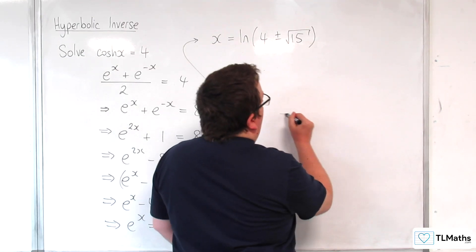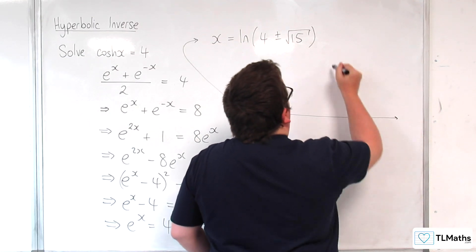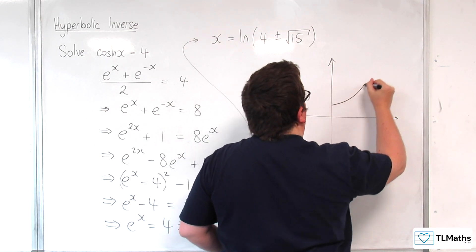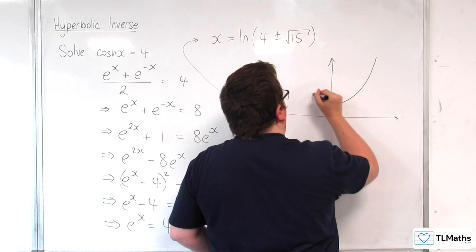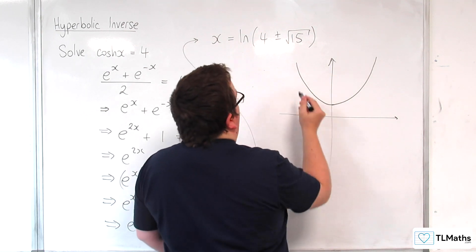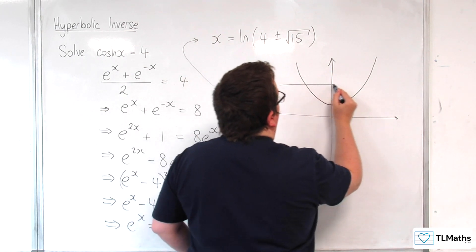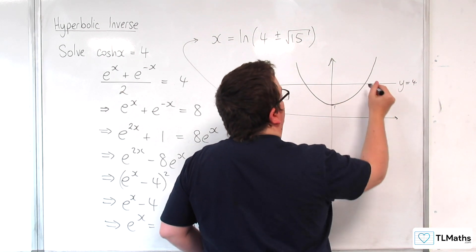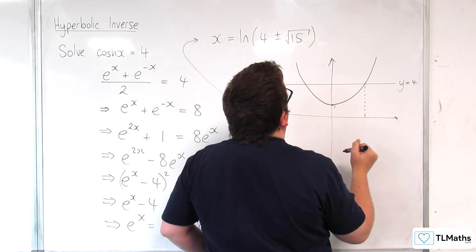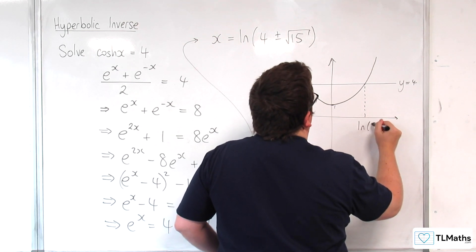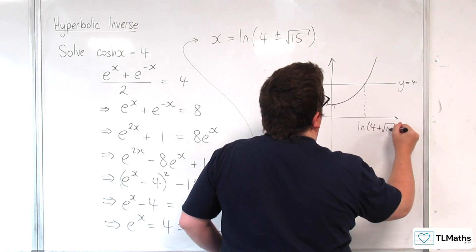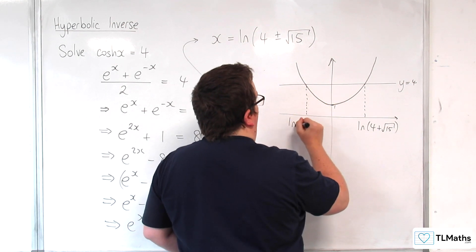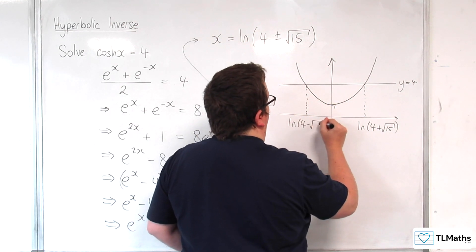And we would be expecting two answers, wouldn't we? Because if we think about the curve of y equals cosh x, which looks like this, then y equals 4 is this line here. Remember that's 1. So we get 2 values, log of 4 plus root 15, and this point here, which is log of 4 minus root 15.